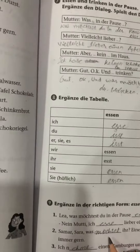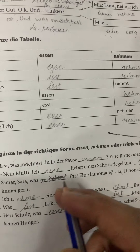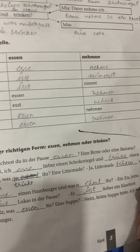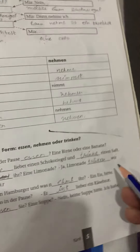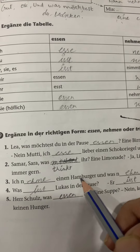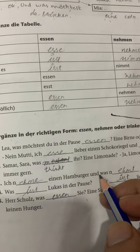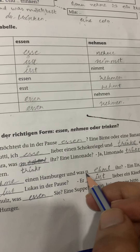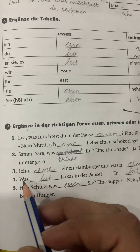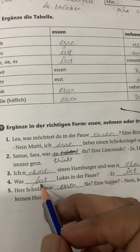Zamar, Zara — was? No modal verb will come here; trinke. Eine Limonade is here — lemonade. Obviously we drink lemonade, not take or eat. So trinke. Lemonade — we like lemonade, we like lemonade very much. Third one: Ich dash einen Hamburger — I take a burger. N is given so nehmen verb will come, and with ich, nehmen changes into nehme. And was dash here — n is given again, so nehme. Einen Eisbeißer — eine Eiscreme, bite is please. Was isst Lukas in der Pause — what does Lukas eat in the break? With Lukas, the conjugation will be isst.